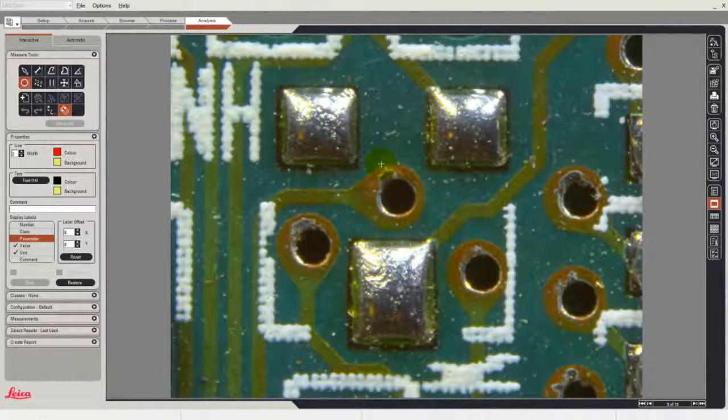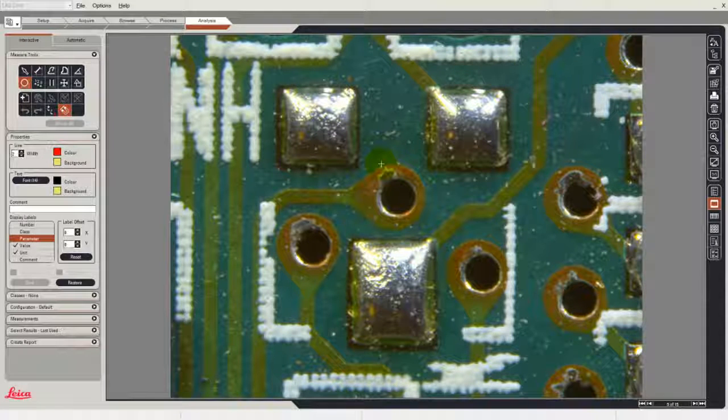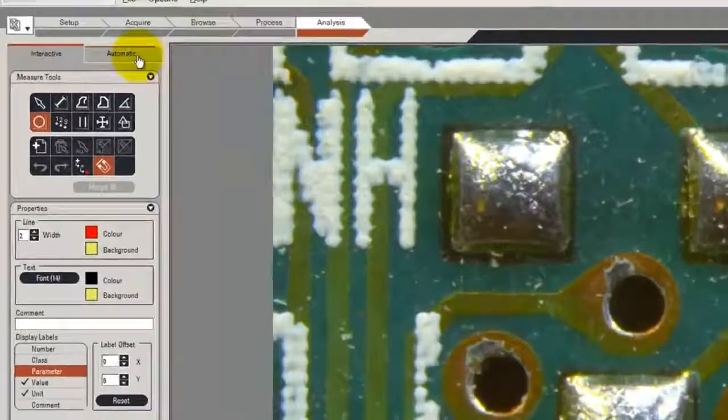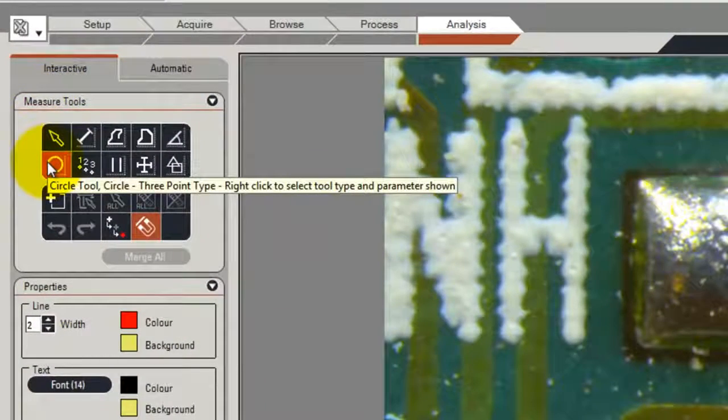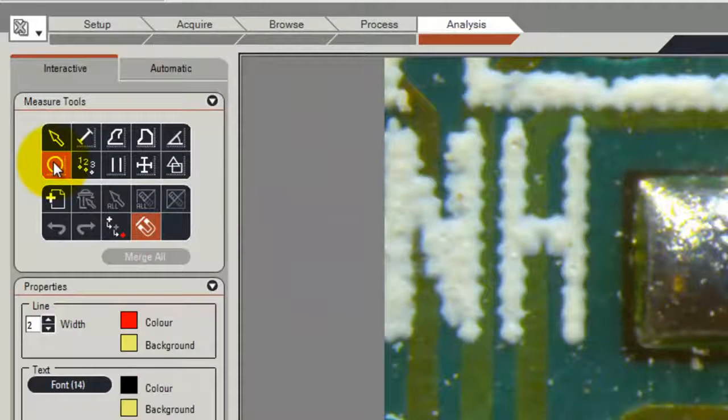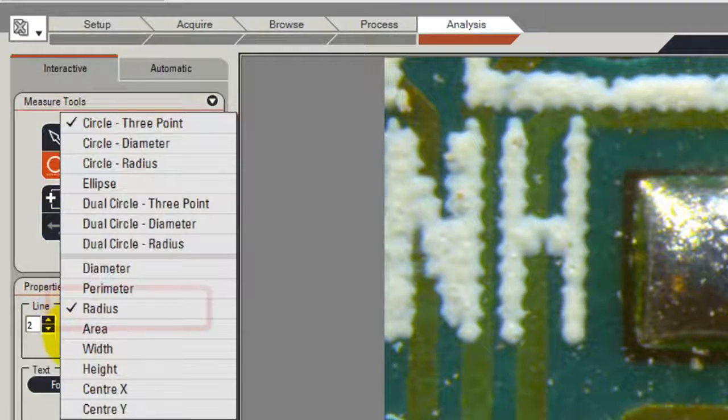In this video we'll take a look at the circle measurement that is available in the interactive measurement module. Circle measurement is selected from the toolbar and for each circle measured there are a number of parameters available. If I right click on the toolbar you can see the list of parameters and I've chosen to show the radius.